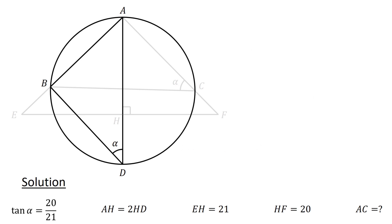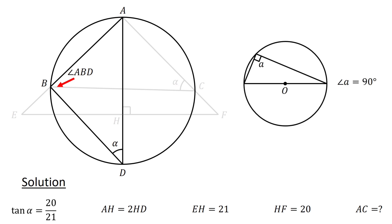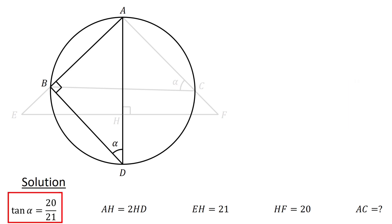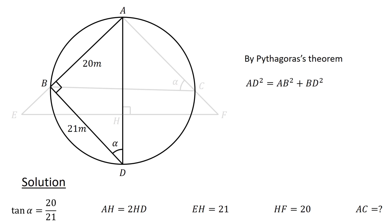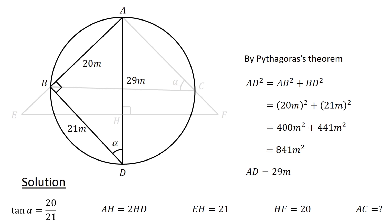Next, consider triangle ABD and the circle. Angle ABD is an angle in a semicircle. Recall that an angle in a semicircle is a right angle. Therefore, angle ABD equals 90 degrees. Since tangent alpha equals 20 over 21, let's define the length of AB as 20M and the length of BD as 21M, where M is a constant. Then, by Pythagoras' theorem, AD squared equals AB squared plus BD squared, or (20M)² plus (21M)², which equals 400M² plus 441M², or 841M². Taking the square root, we obtain AD equals 29M.